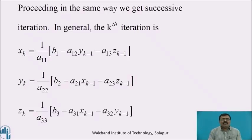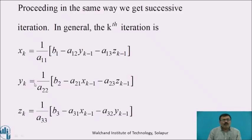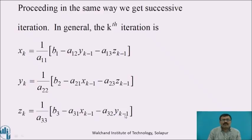In general, the kth iteration is: x_k = 1/a11 × (b1 − a12·y_(k−1) − a13·z_(k−1)); y_k = 1/a22 × (b2 − a21·x_(k−1) − a23·z_(k−1)); z_k = 1/a33 × (b3 − a31·x_(k−1) − a32·y_(k−1)).